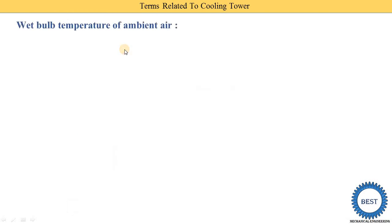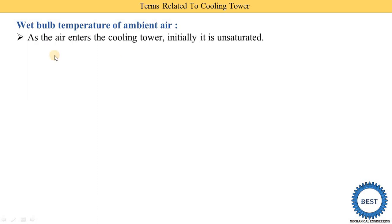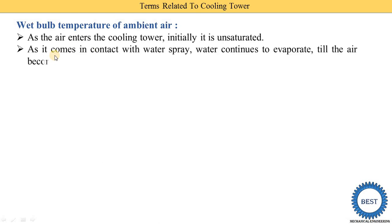The third term is the wet bulb temperature of ambient air. As the air enters the cooling tower, initially it is unsaturated — meaning it has no water vapor particles. As it comes in contact with the water spray, water continues to evaporate until the air becomes saturated.